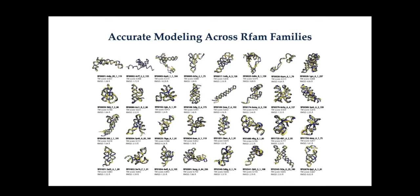Now for the overall results. We applied this pipeline across different RFAM families. RFAM is a database of RNA families with diverse structures. Across 32 experimentally resolved RFAM families, we're able to generate accurate folds — from well-characterized families like tRNA to less well-characterized ones. The success of the modeling accuracy isn't localized to any single family, which is pretty encouraging.